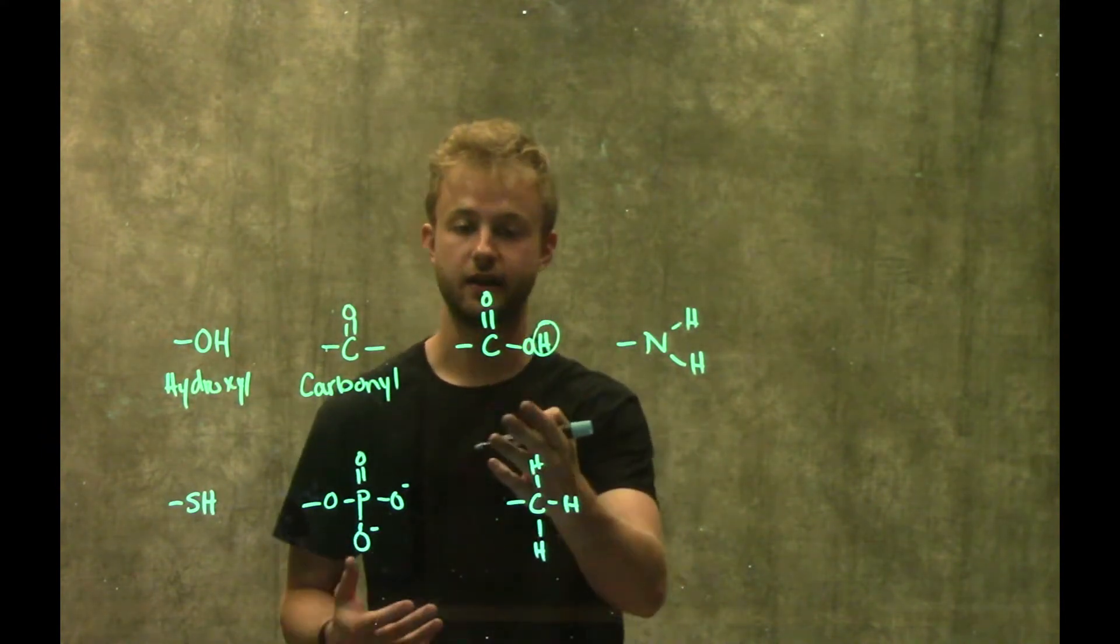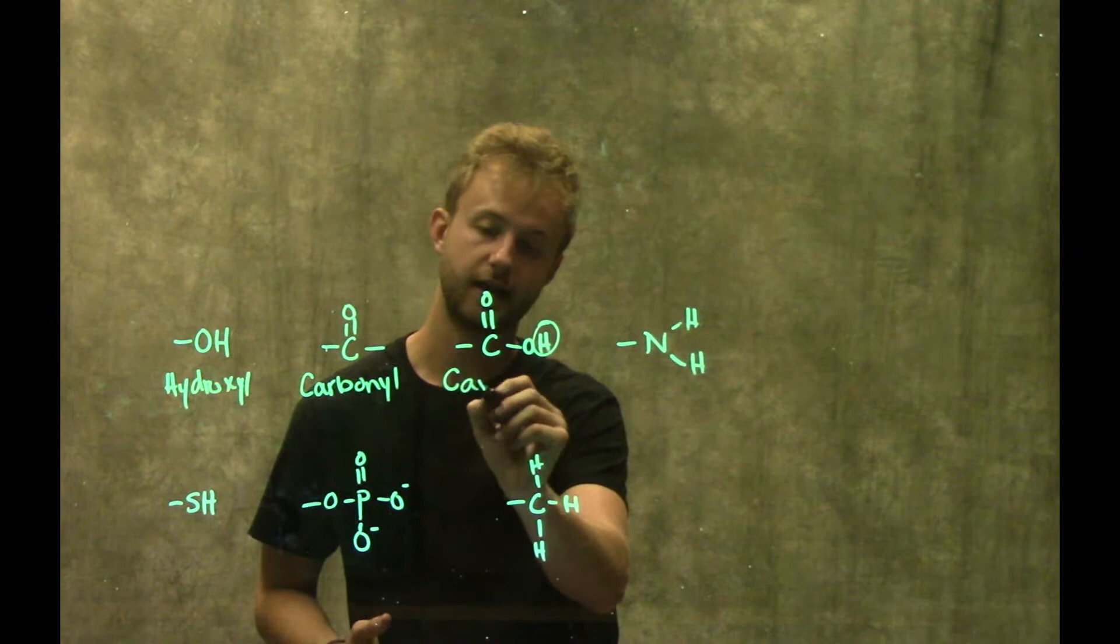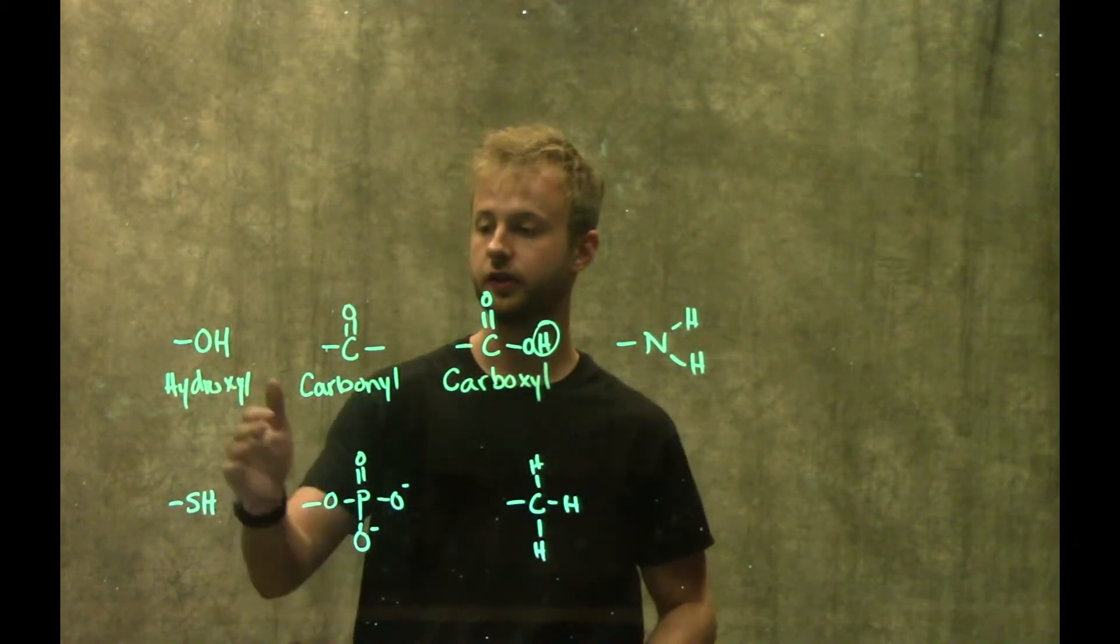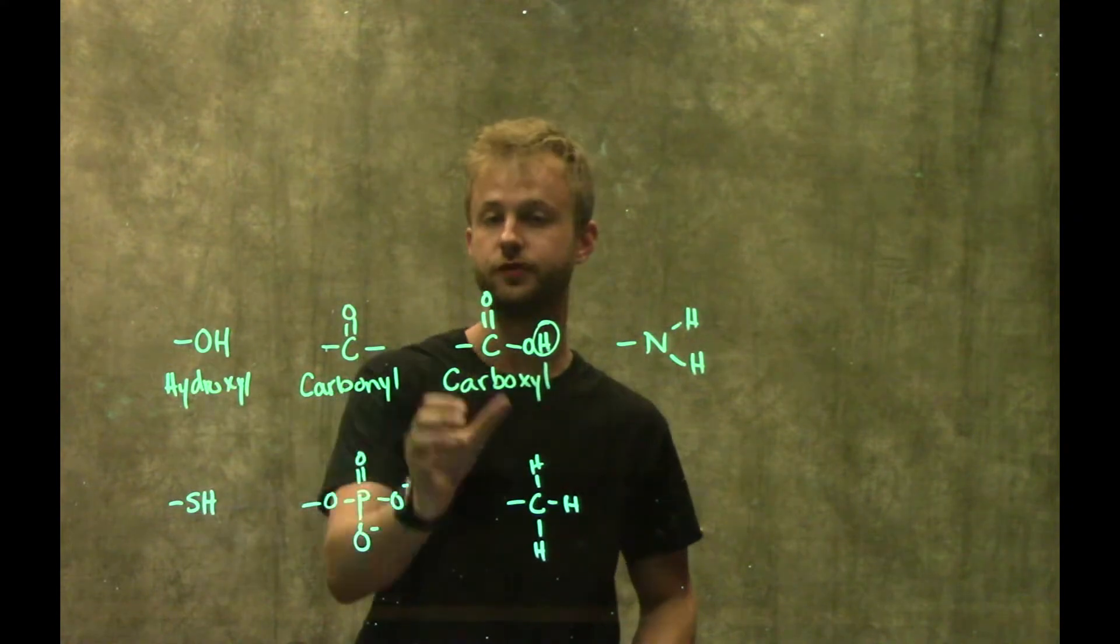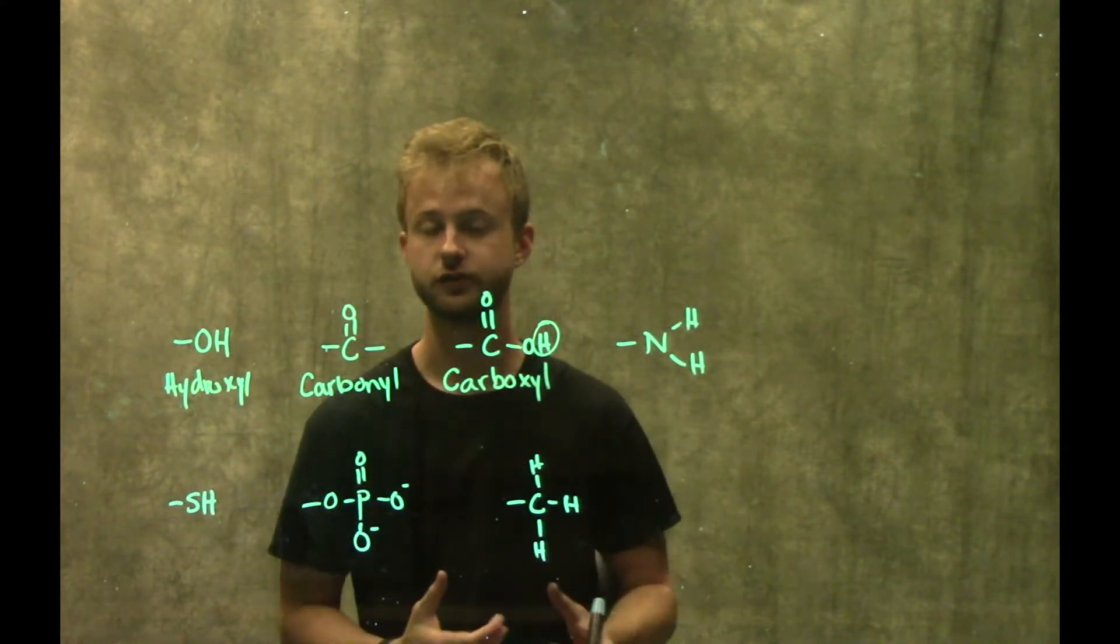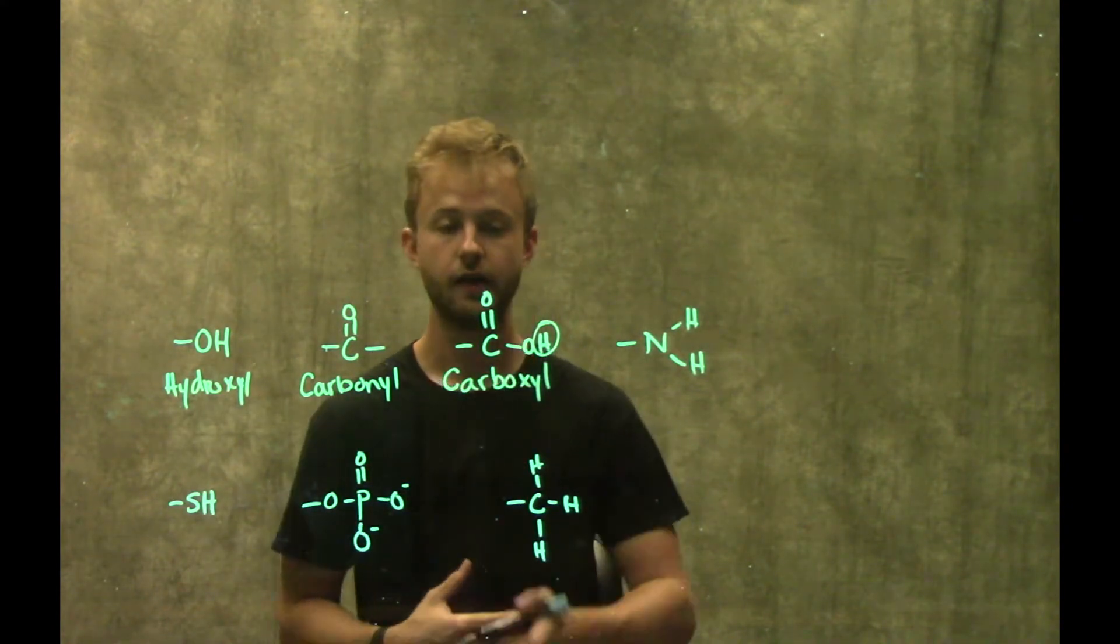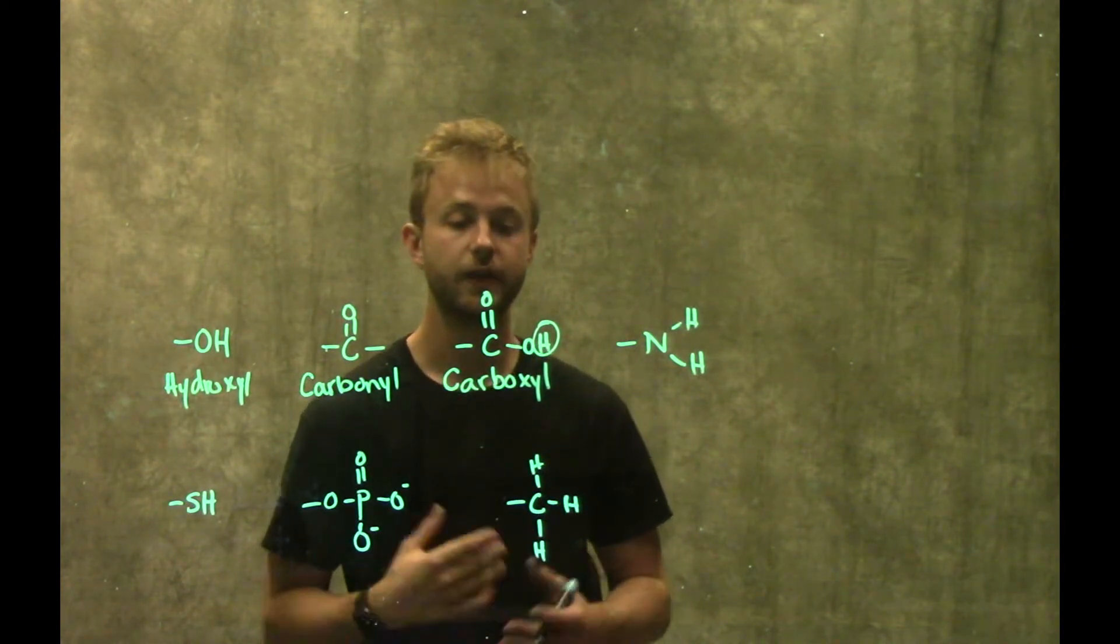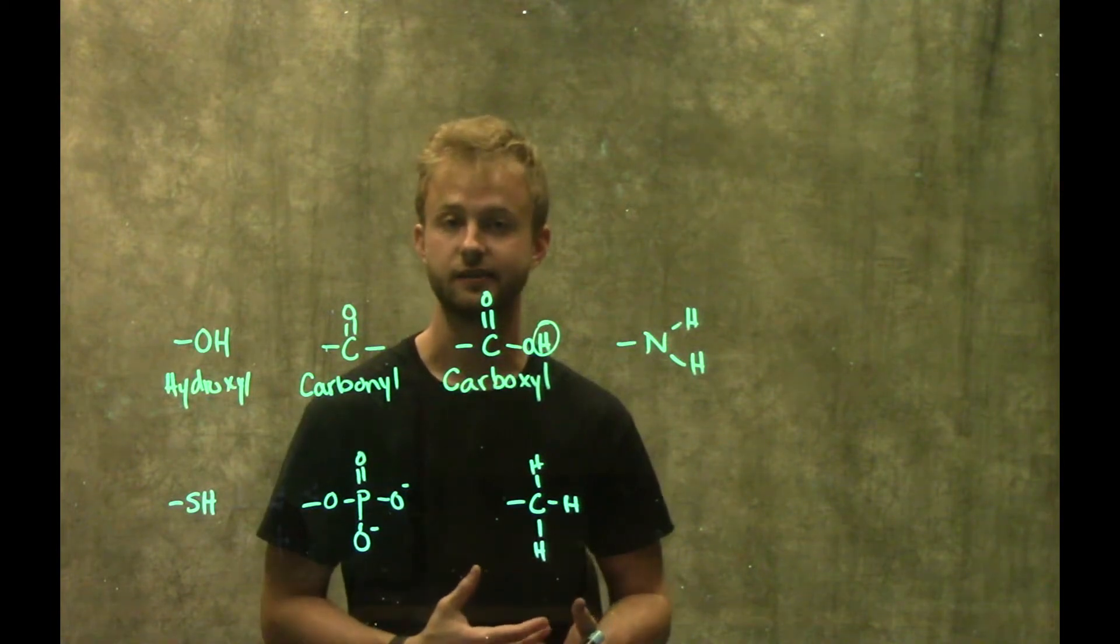The next group we're going to look at is a carboxyl group or a carboxylic acid group. Similarly to the hydroxyl group, this group is very polar, so when we add it to a molecule, it's going to help that molecule interact with water. These are also found in sugars, contributing to sugars being able to interact with water, as well as in fatty acids.